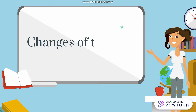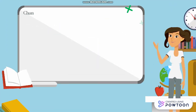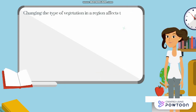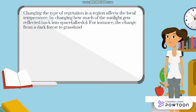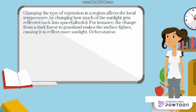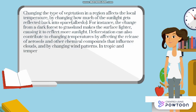And lastly, changes of the land surface. Changing the type of vegetation in a region affects the local temperature by changing how much sunlight gets reflected back into space. For instance, the change from a dark forest to grassland makes the surface lighter, causing it to reflect more sunlight. Deforestation can also contribute to changing temperatures by affecting the release of aerosols and other chemical compounds that influence clouds.